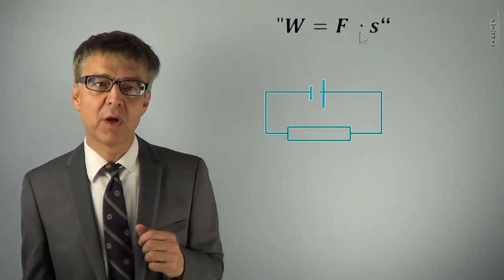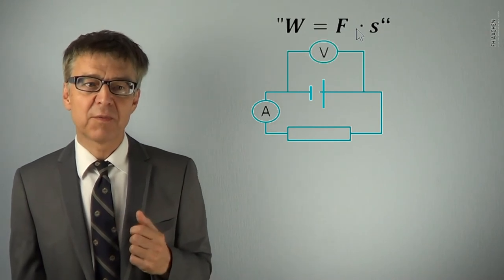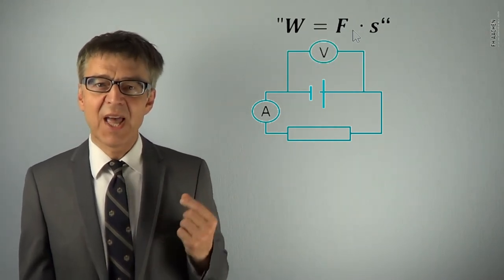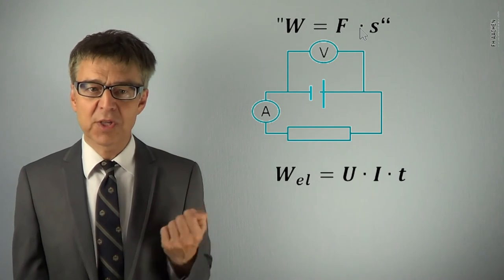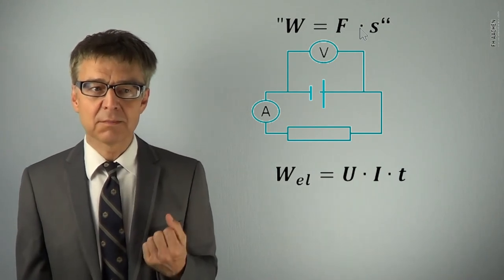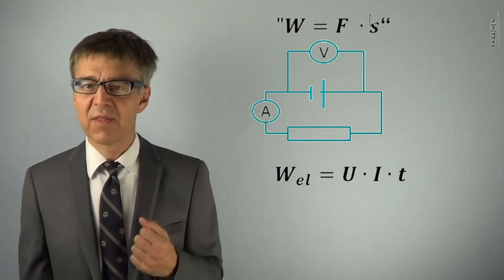In electrical engineering, we move charges through an electric field. With an ammeter, we measure the current. With a voltmeter, we measure the strength of the electric field or voltage. Electrical work is U times I times T. I times T is the charge.